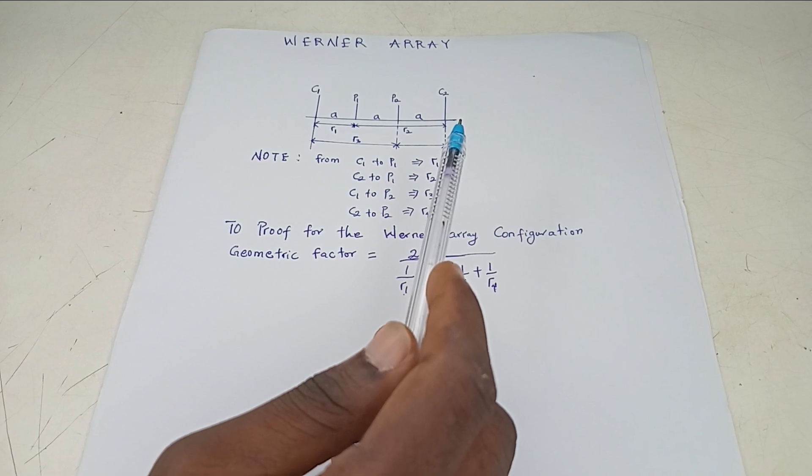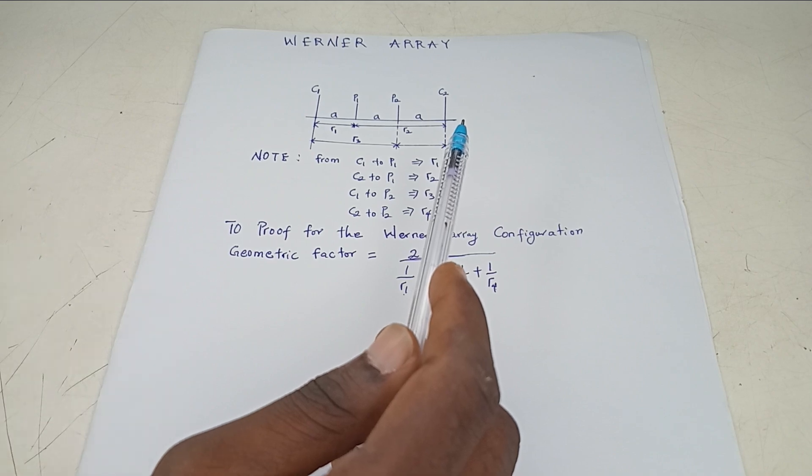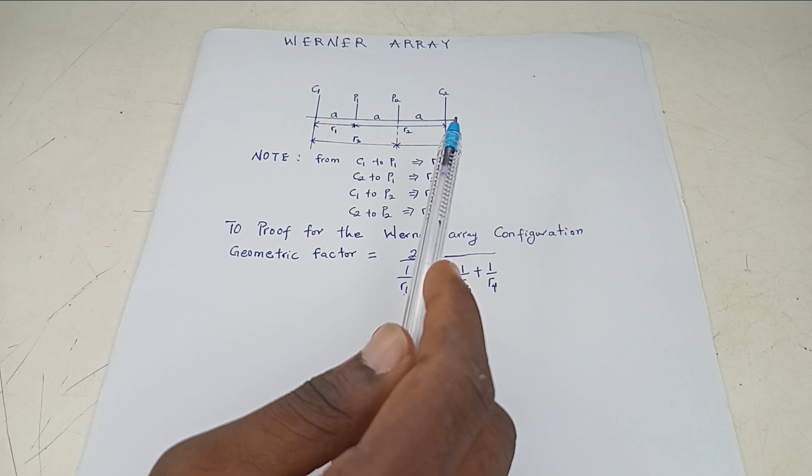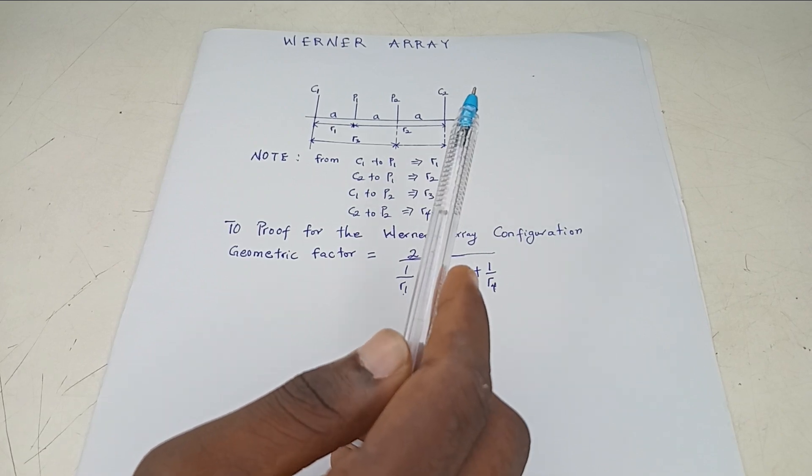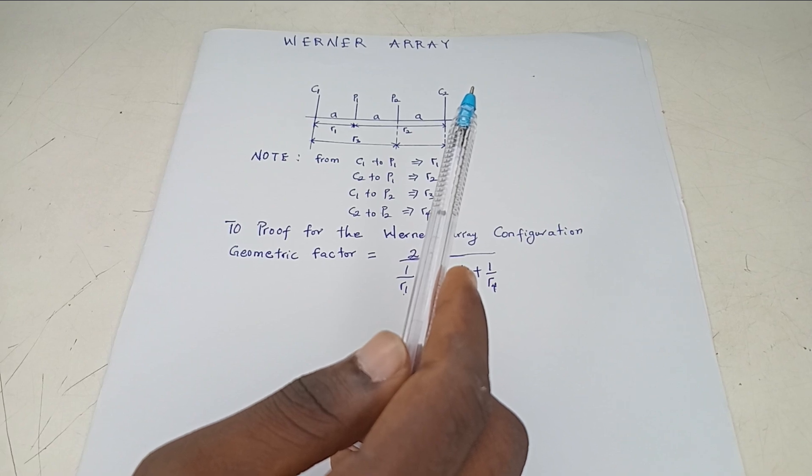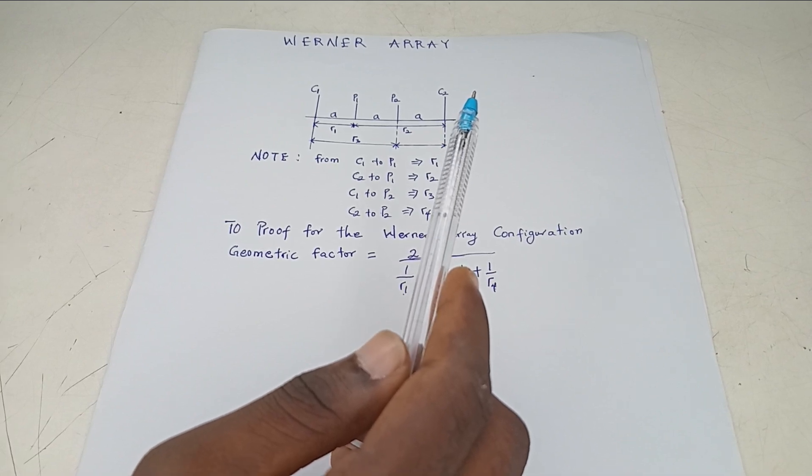And I told you again that the idea that you use is you are covering the first potential first. So you are doing C1 to P1, C2 to P1. That's for R1 and R2. While R3, R4 is for the second potential, but you still start from C1 to P2, C2 to P2.